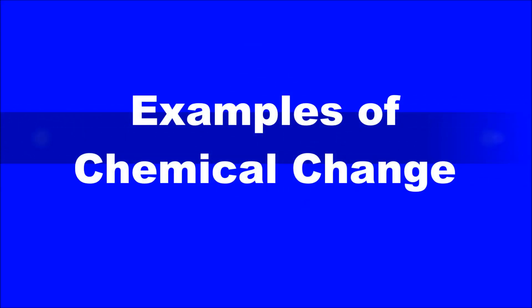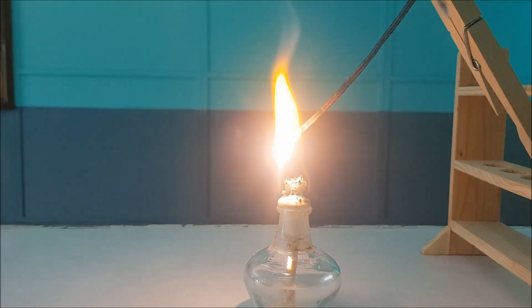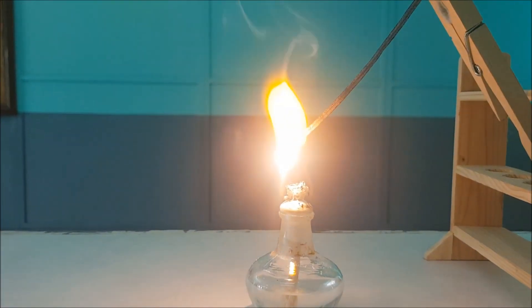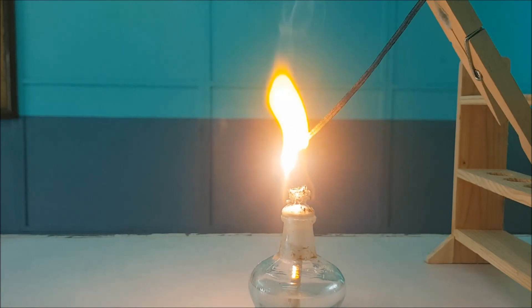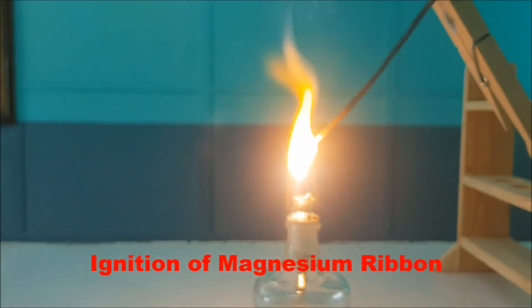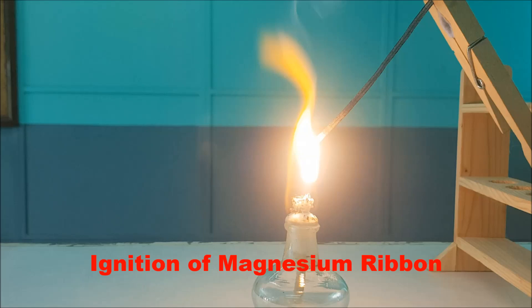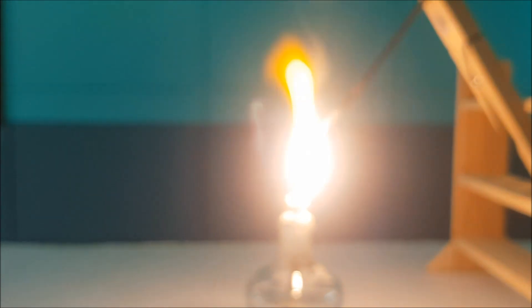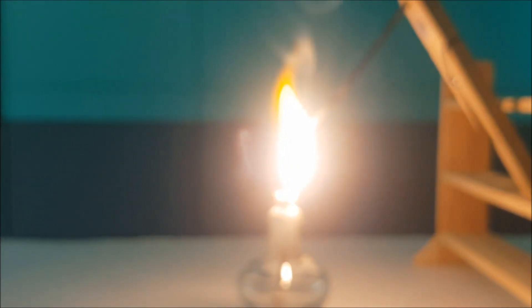Are you familiar with magnesium? So magnesium is a metal. So here we have magnesium ribbon. We are trying to ignite a magnesium ribbon using alcohol lamp. The ignition of magnesium ribbon is an example of chemical change.